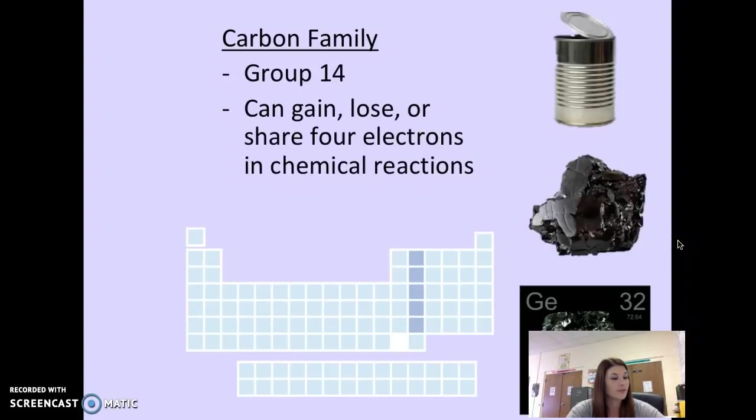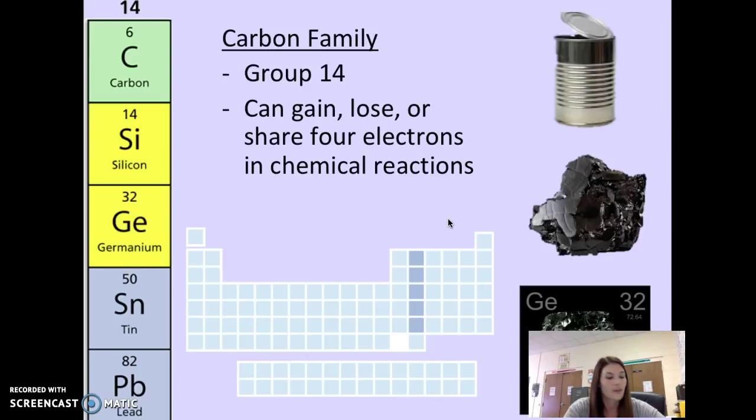We do have some families of different types of nonmetals. So we're going to go with the columns or the groups, the family names. We're starting with a carbon family. The carbon family is in group 14 on the periodic table. They can gain or lose four electrons in chemical reactions. So when elements decide to join with other elements to make compounds, it all depends on the number of electrons that they have to determine what kind of compounds they make.